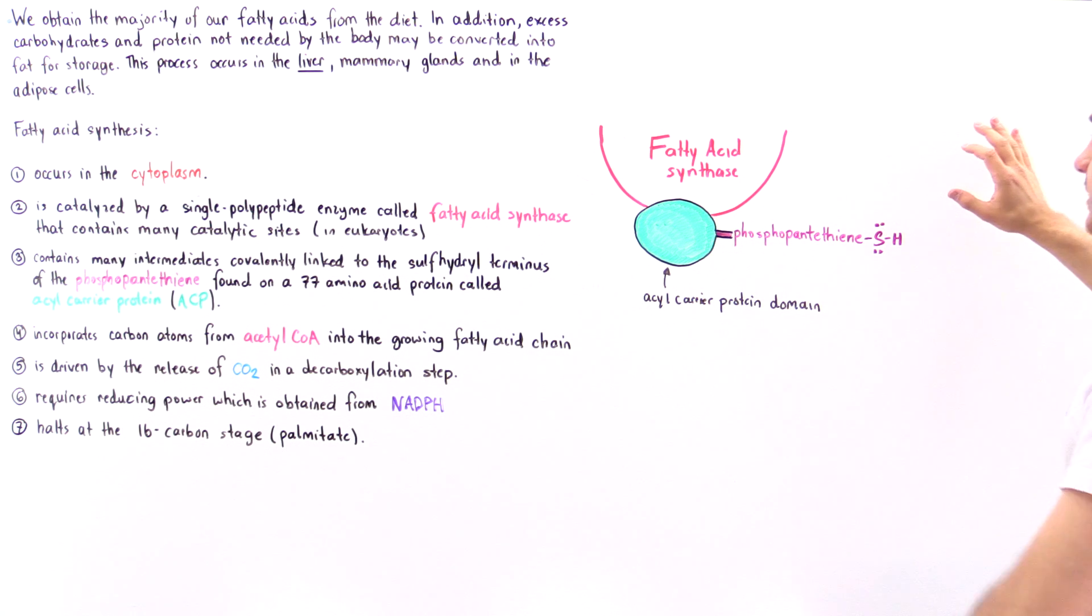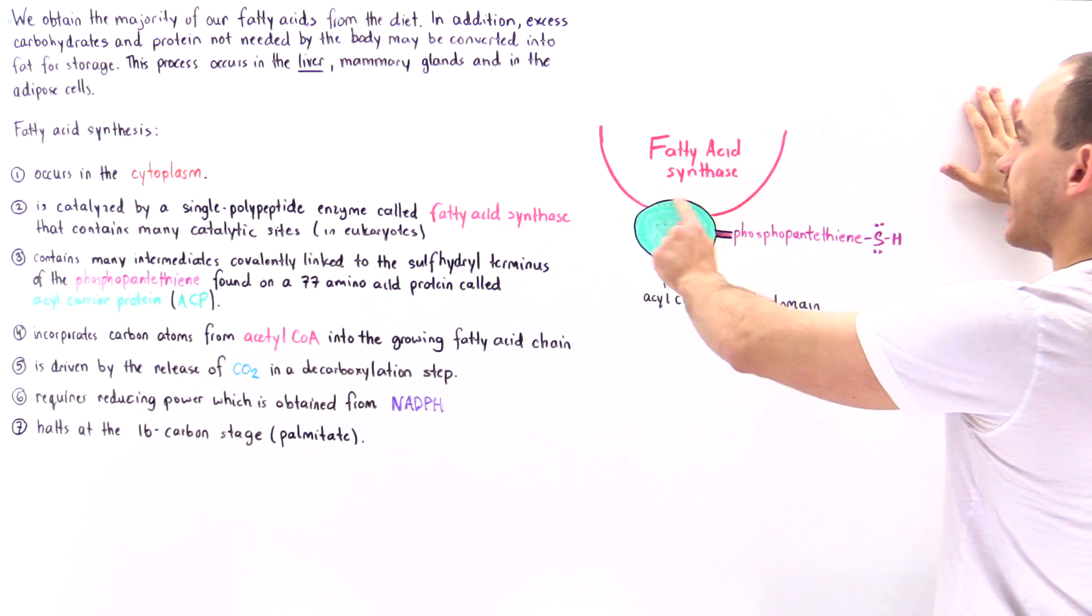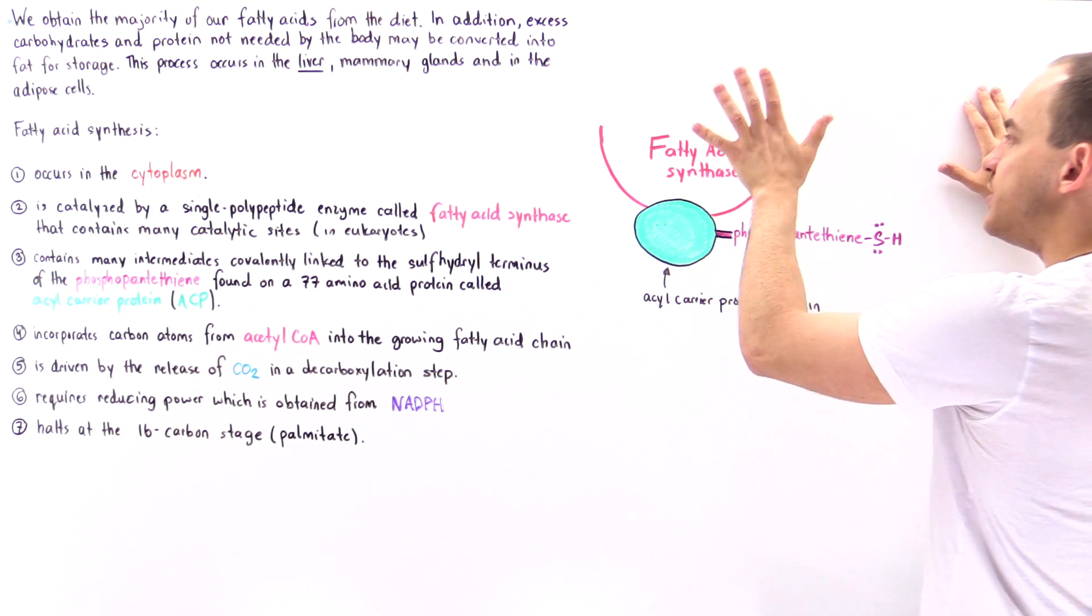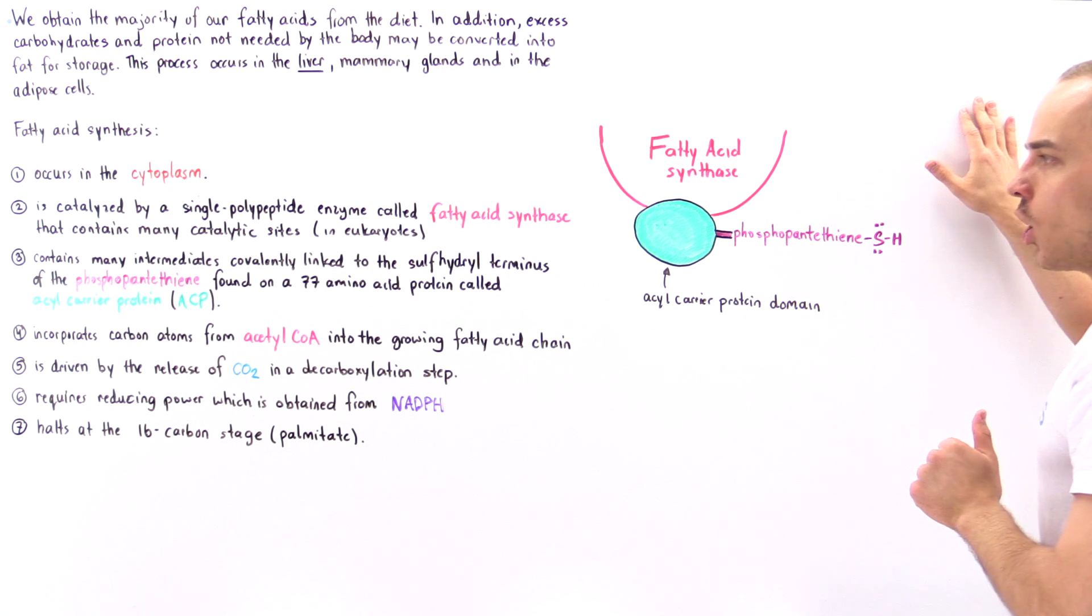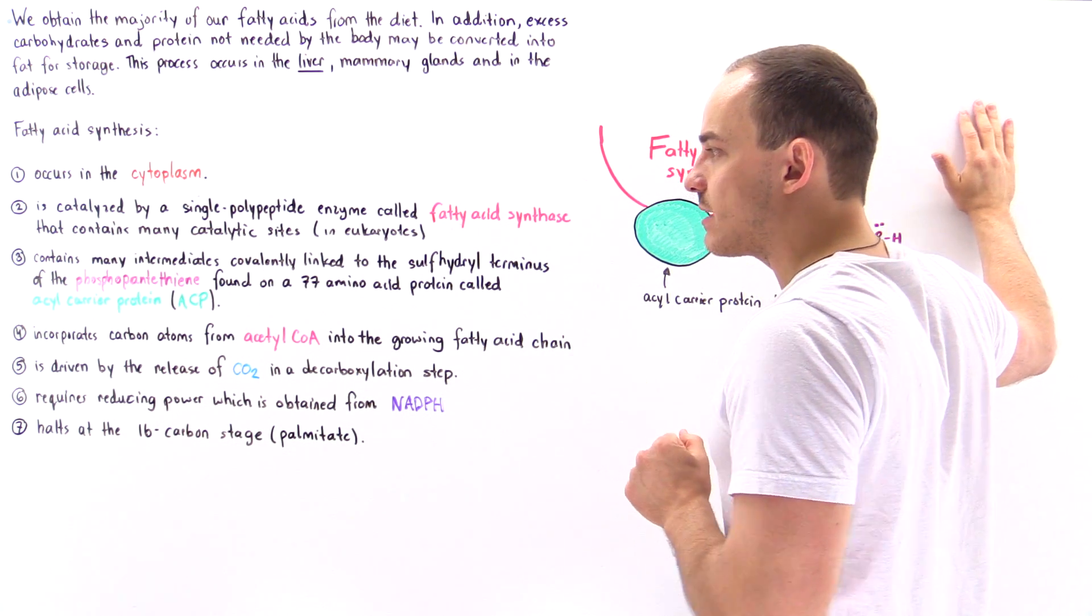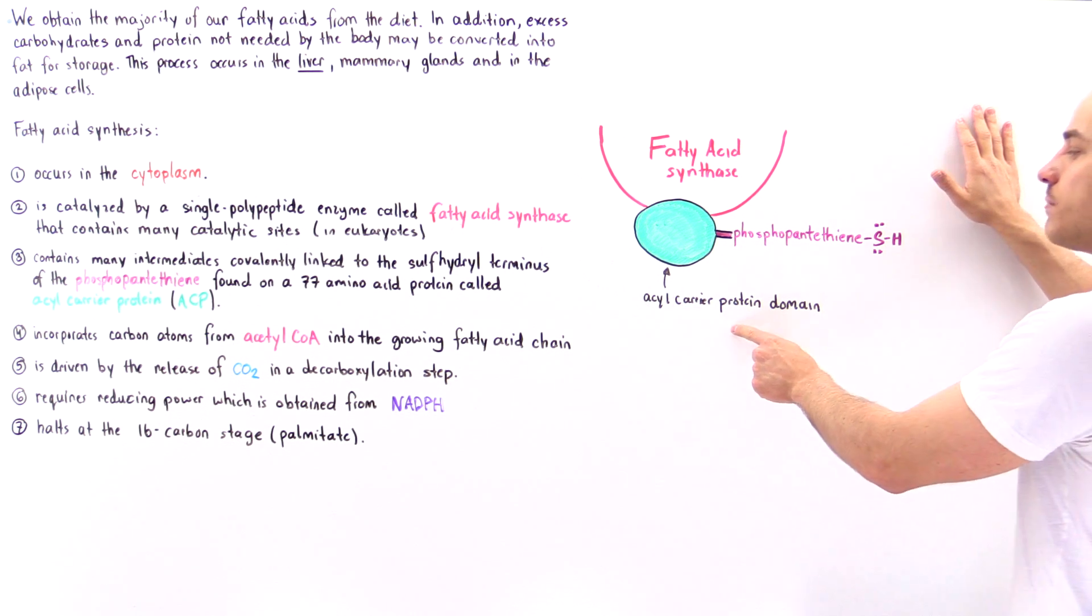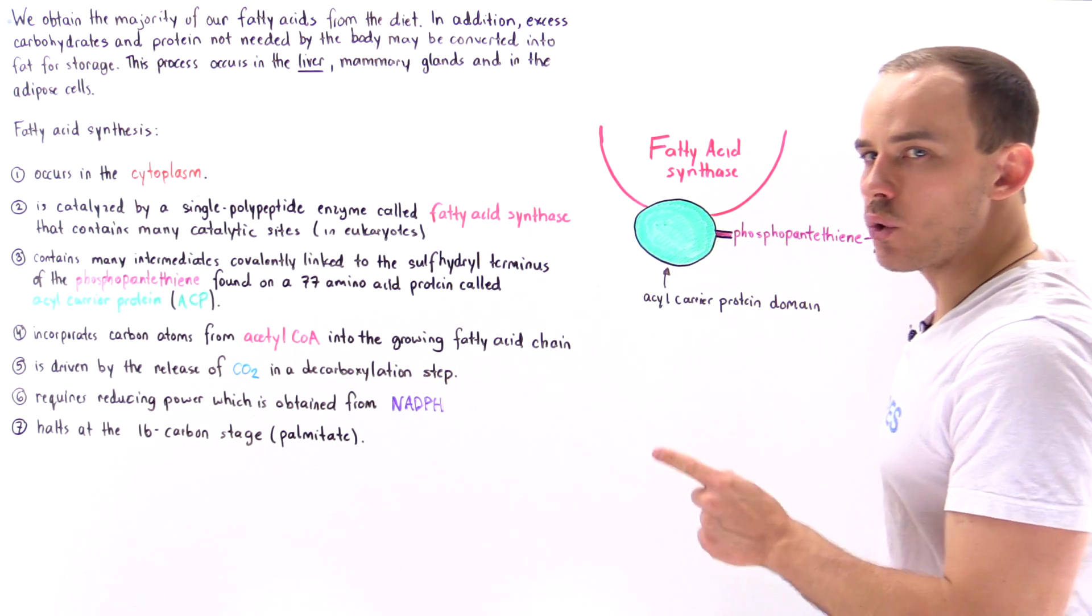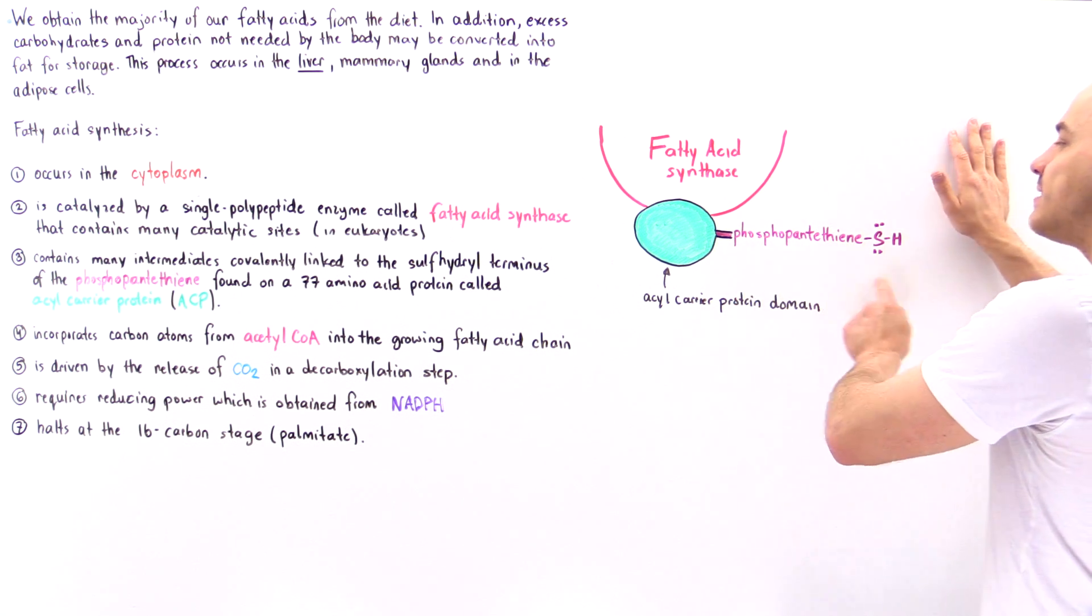So to see exactly what we mean, let's take a look at the following diagram. So we have the fatty acid synthase shown in red, and that contains seven catalytic sites, which are not shown. In addition to those seven catalytic sites, we also have a domain we call the acyl carrier protein domain, and that's shown in green. And attached onto this acyl carrier protein is the vitamin B5 derivative we call phosphopantethine.